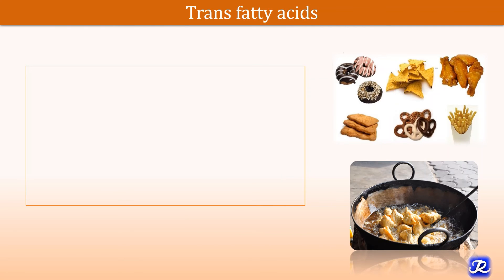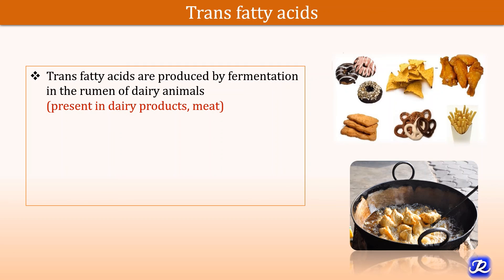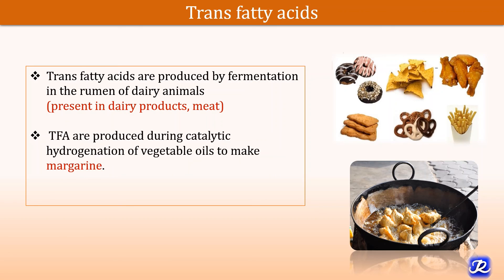Trans fatty acids possess double bonds and they are formed during hydrogenation — that is, saturation of natural oils. These trans fatty acids are widely used in the food industry, such as in fast food and ready-to-eat packaged food, to increase the shelf life of various foods. They are also produced by fermentation in the rumen of dairy animals, and that's why they are present in dairy products and meat. TFA are also produced during catalytic hydrogenation of vegetable oils to make margarine.